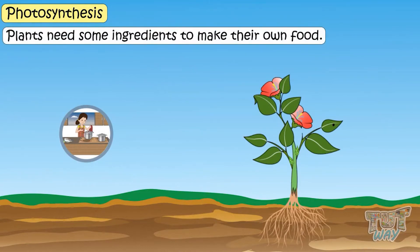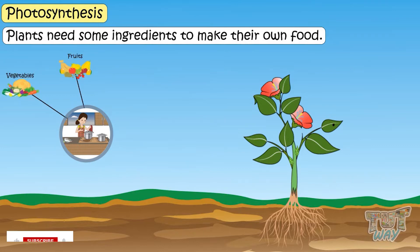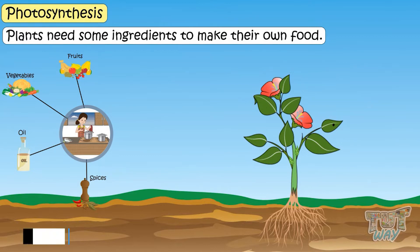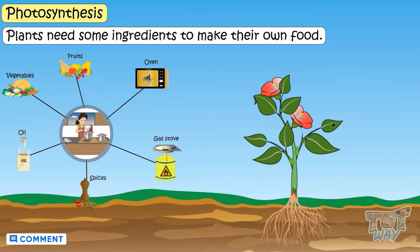Just as we need ingredients to make any food, plants also need some ingredients to make their food. To prepare our food, we need fruits or vegetables, oils and spices, and we also need energy in the form of heat — it can be an oven or a gas stove.